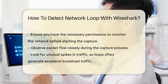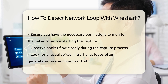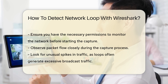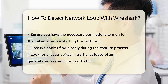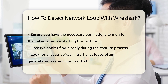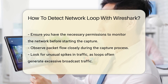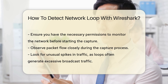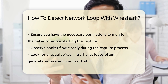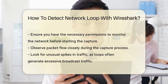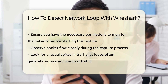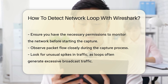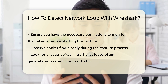Look for unusual spikes in traffic. A network loop often generates excessive broadcast traffic, which can be identified by a high volume of packets in a short timeframe. Pay attention to the source and destination addresses of the packets. In a loop, you may notice the same MAC address appearing repeatedly.